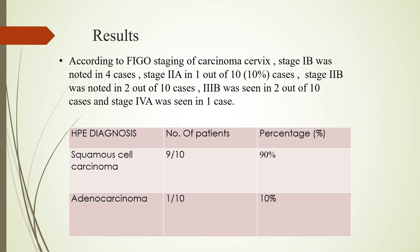According to the FIGO staging, stage 1B was noted in 4 cases, stage 2A was seen in 1 out of 10 cases, stage 2B was noted in 2 out of 10 cases, stage 3B was seen in 2 out of 10 cases, and stage 4A was seen in 1 case. On histopathological examination, the majority of the cases — 90% — had a diagnosis of squamous cell carcinoma, while adenocarcinoma was seen in only 1 case.